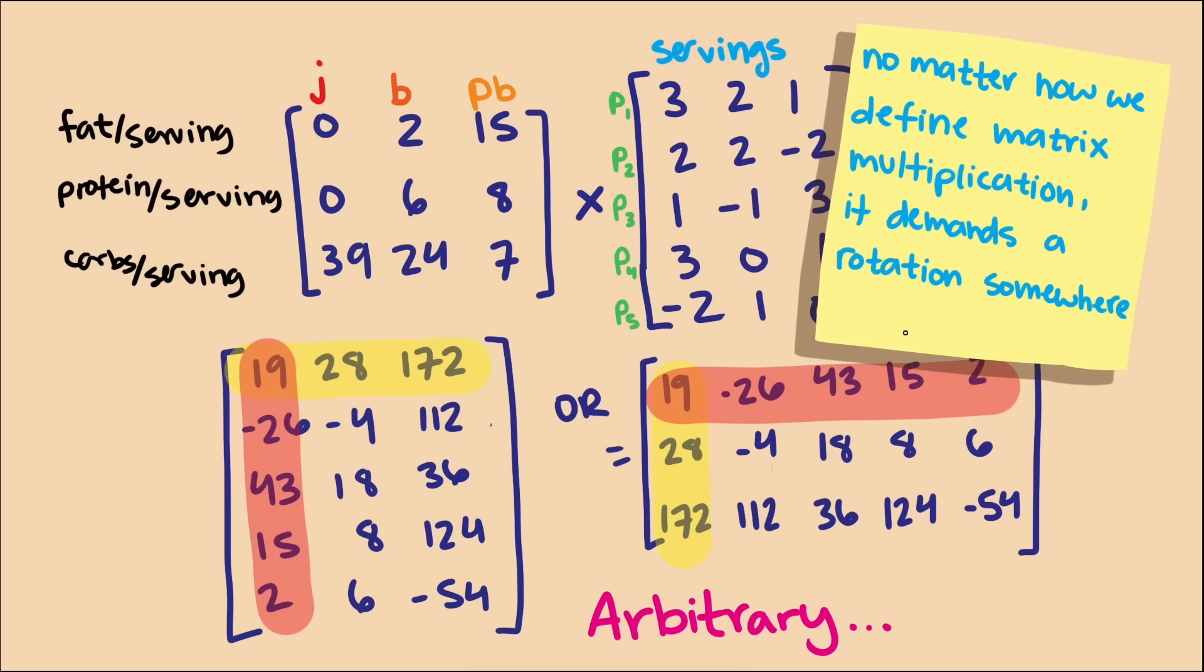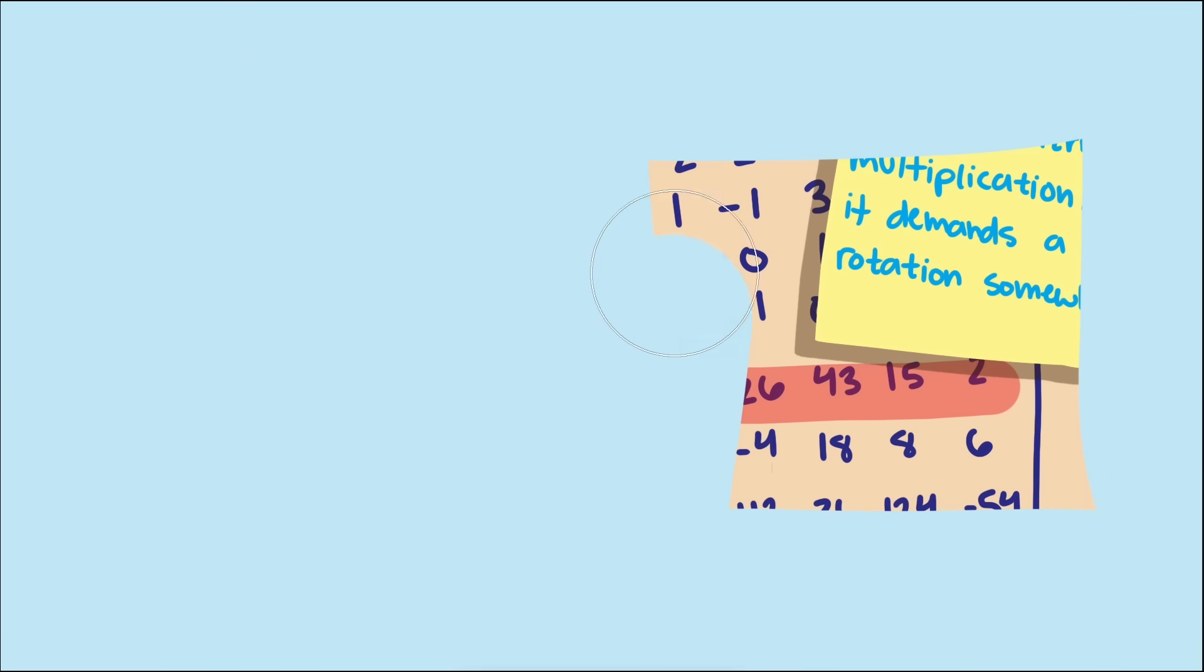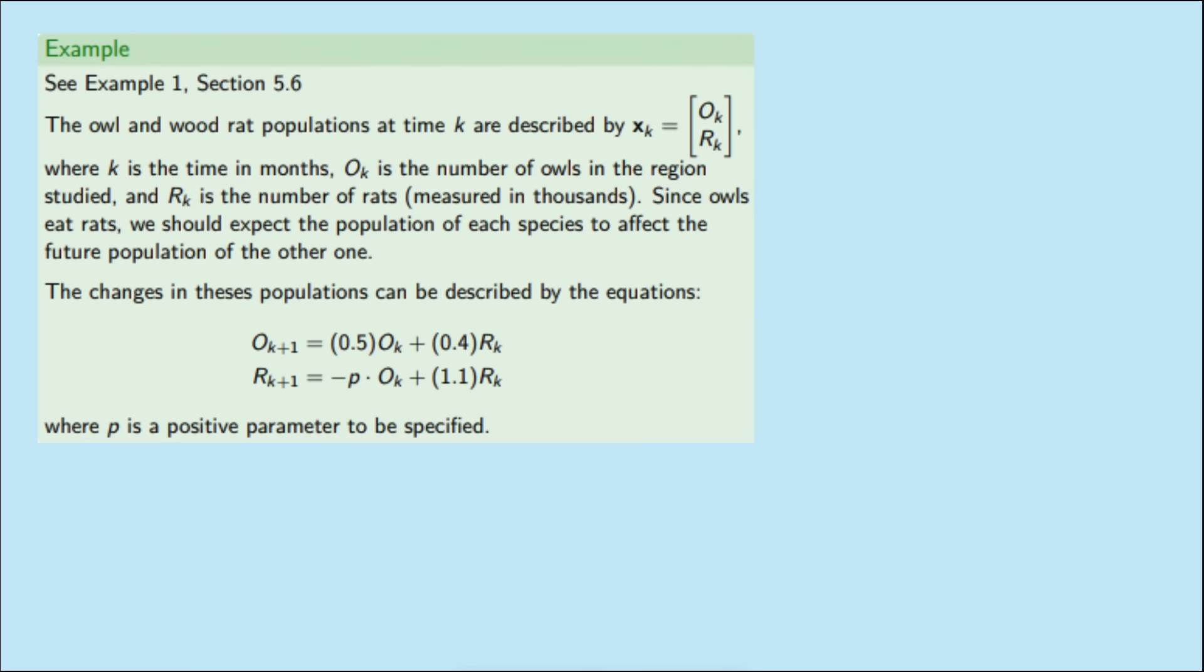Other contexts also point towards defining multiplication the way we have developed. Some matrix vector products create an outcome with the same units as the original vector. For example, in population modeling, matrix multiplication is used to estimate future populations. This simple matrix can be used to estimate owl and woodrat populations in a region. Owls in that region largely depend on woodrats to survive, so their populations are closely connected. The units of the population vector is in individual owls and thousands of woodrats. Given a population vector, we multiply this matrix to predict the next month's population of both.